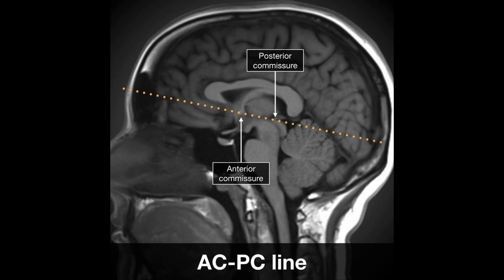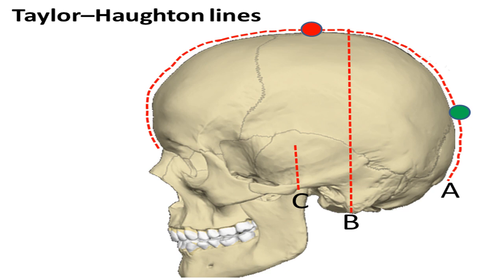The next lines are collectively called the Taylor-Hutton lines. The first one is a curved line connecting the nasion to the inion in the mid-sagittal section — we can call it line A. The second line is perpendicular to the Frankfurt line but passing over the mastoid tip — let's call it line B. The third one is also perpendicular to the Frankfurt line but passing on the condyle of the mandible, so it is the condyle line or line C.